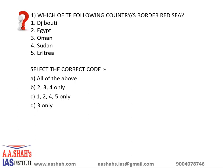The correct answer here is C: 1, 2, 4, 5 only. The reason being Oman does not border the Red Sea. So now let's look at how the bordering takes place.